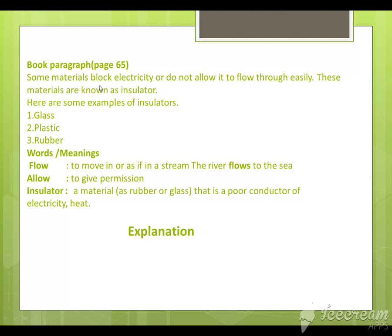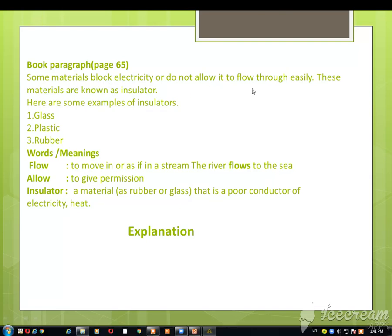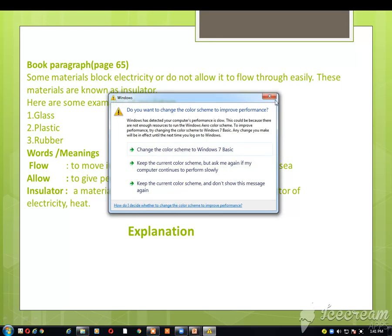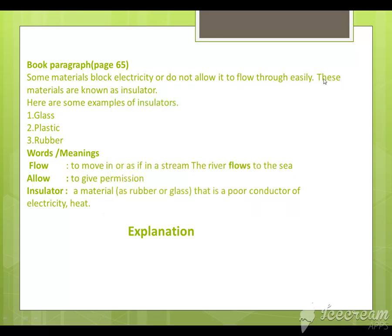From page number 65: some materials block electricity or do not allow it to flow through them easily. These materials are known as insulators. Here are some examples of insulators: glass, plastic, and rubber.